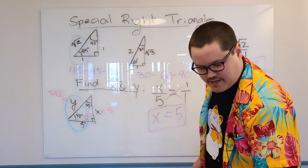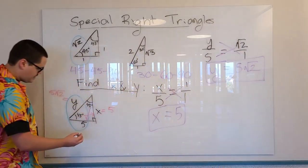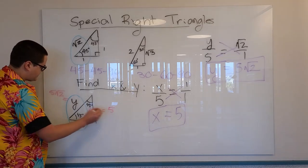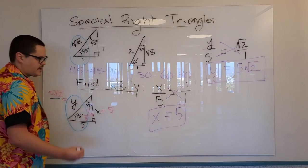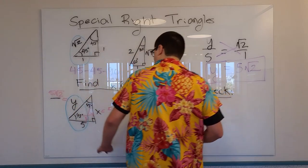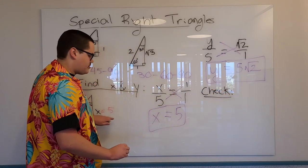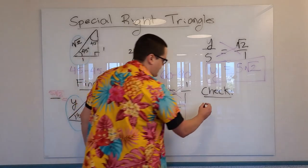So can we check that? Well, yeah, let's check it. So these are the short sides. This is the hypotenuse. So we can check it. Well, let's check it over here. If I add up the squares of these two short sides, I should get the square of the long side.